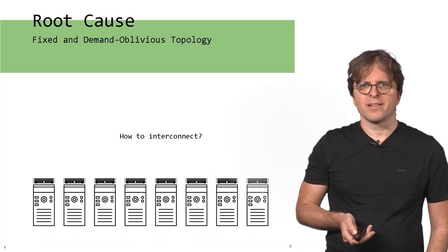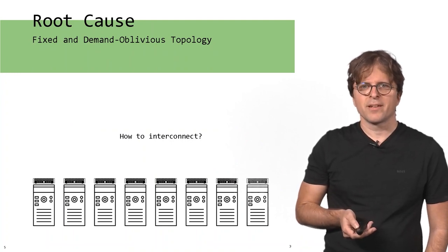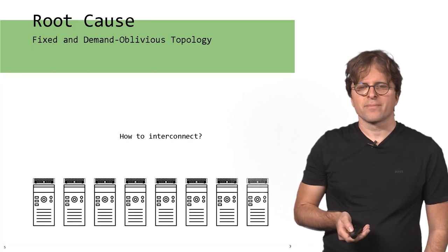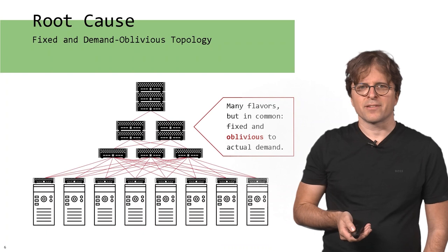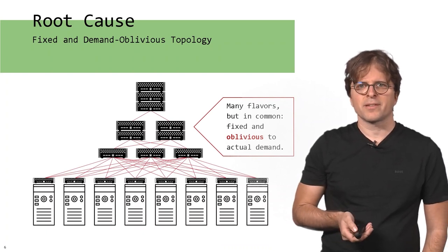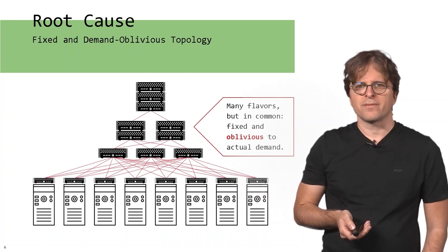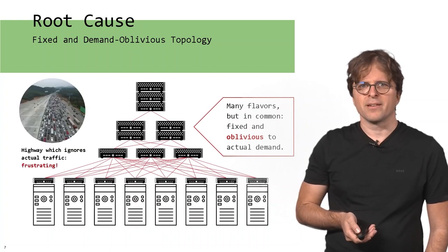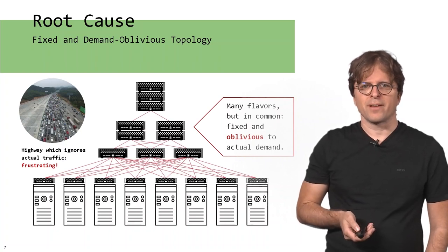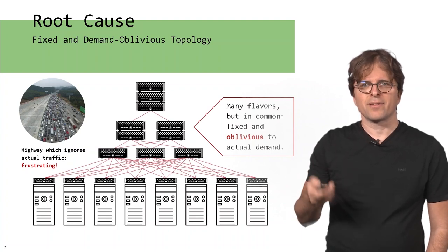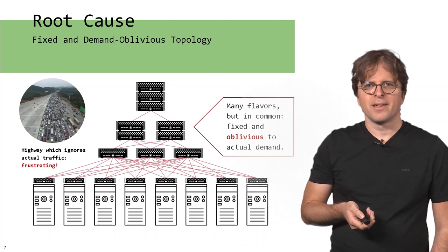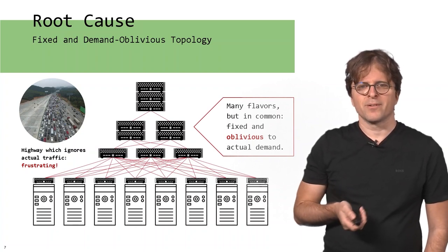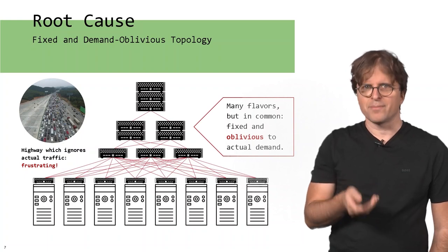So what's the root cause behind these inefficiencies? If you look at a basic data center with servers and racks, the question is how to interconnect those. There are many different ways data centers are interconnected today, but all of them have in common that they are fixed and oblivious to the actual traffic demand. We argue this is one of the causes of inefficiencies. You can think of it like building a highway which ignores the actual traffic. If you're on the right in a traffic jam and on the left there's a lot of capacity available, it would be much better if you could use some of that infrastructure.